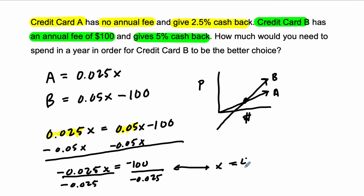Okay, so at $4,000, they're equal. So any amount over $4,000, right, that means credit card B will be more profitable. So I wouldn't pick credit card B unless I know for sure I'm spending more than $4,000.